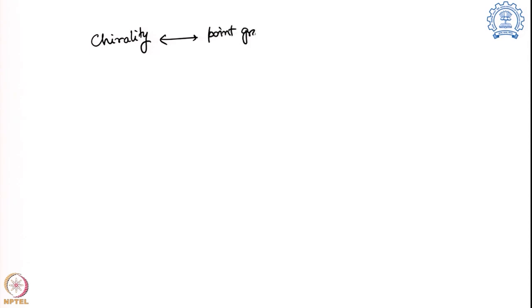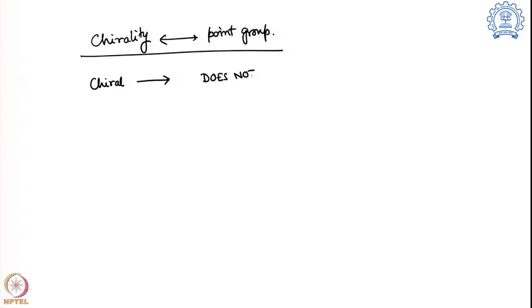Let me refresh your memory a little bit about chirality and point groups. The take-home message from this previous segment was that a molecule can be chiral if it does not have any SN axis. The presence of an SN axis is directly connected to chirality.